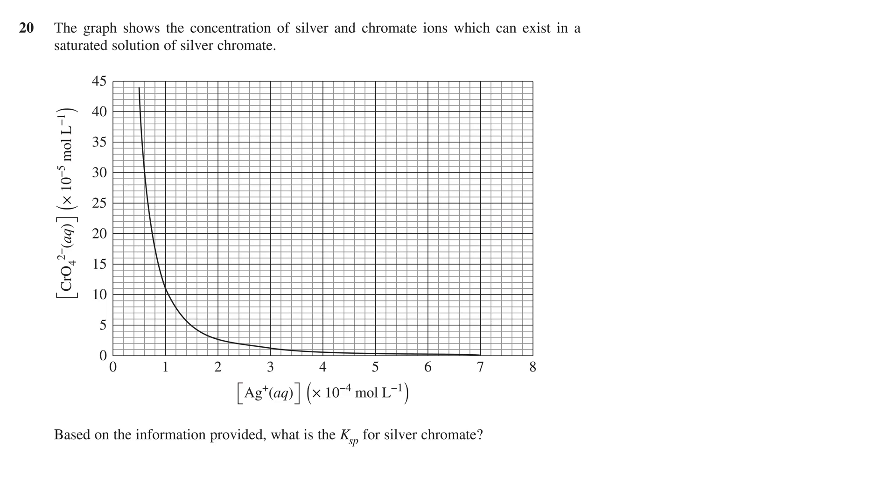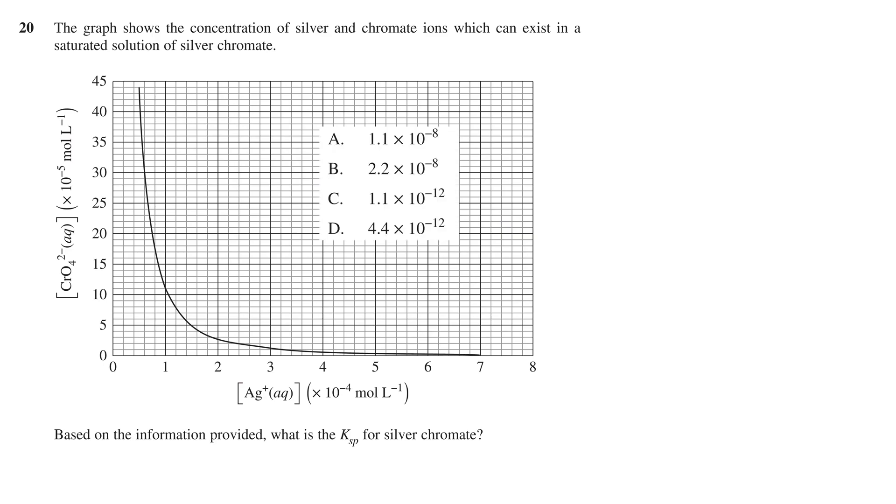The question is then, based on the information provided, what is the Ksp for silver chromate? To save space, we will list out the options here, and see that they range from 1.1 times 10 to the negative 8, to 4.4 times 10 to the negative 12.